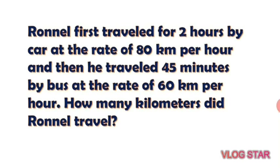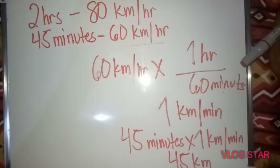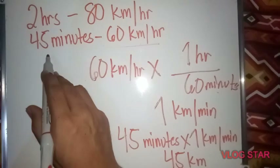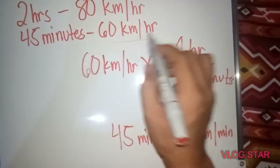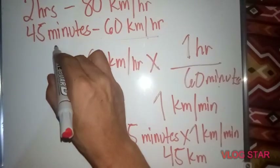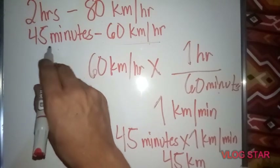Word problem: Ronel first traveled for two hours by car at the rate of 80 km per hour, and then he traveled 45 minutes by bus at the rate of 60 km per hour. How many kilometers did Ronel travel? The first step is to convert 60 km per hour into kilometers per minute, because the given time for the bus is 45 minutes.